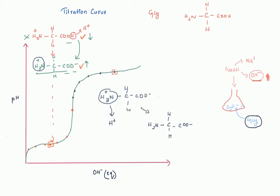Moving further up the curve, there is another point where there are equal amounts of the NH3⁺/COO⁻ form and the NH2/COO⁻ form. As we keep increasing the pH, all the NH3⁺ groups donate their H⁺ and get fully converted into NH2, so only the NH2/COO⁻ form remains.